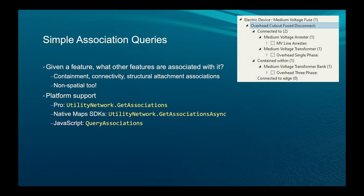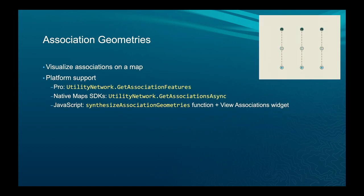For associations — knowing what features are associated with a given feature — we have support across the platform with a number of different queries. Association geometries, the little tool in Pro you can toggle on and off, are also supported across the platform. Notably, we have a view associations widget in JavaScript, so you can just add that to your map and toggle those associations on and off.